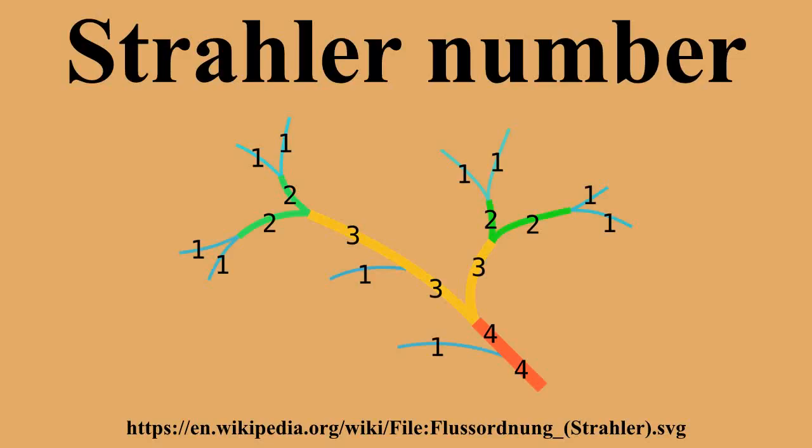In mathematics, the Strahler number, or Horton-Strahler number, of a mathematical tree is a numerical measure of its branching complexity. These numbers were first developed in hydrology by Robert E. Horton and Arthur Newell Strahler.